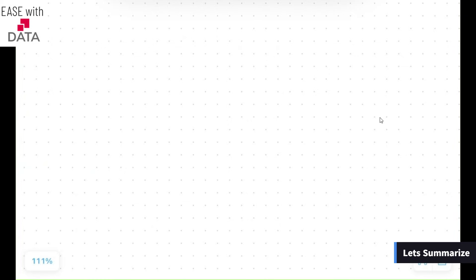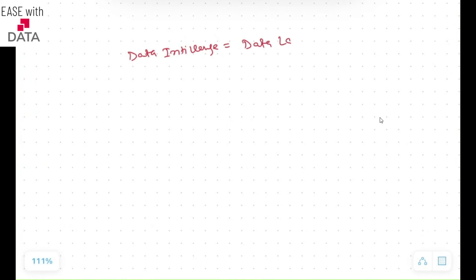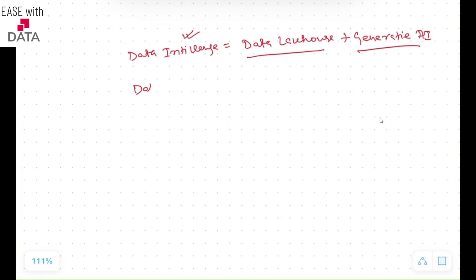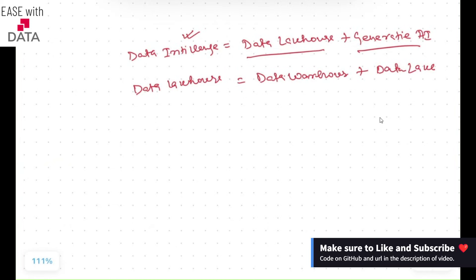Let's recap and understand what is the Data Intelligence platform. It is nothing but Data Lakehouse plus Generative AI. Generative AI gives the Data Intelligence platform its power for natural language, and it allows enterprises to get insights from their enterprise data. And what is Data Lakehouse? It is nothing but Data Warehouse plus Data Lake. Now you understand why Databricks is called a Data Intelligence platform, and what are all the benefits Databricks provides out of the box.